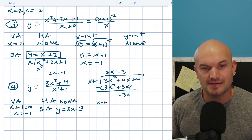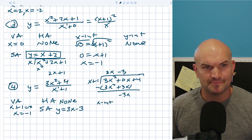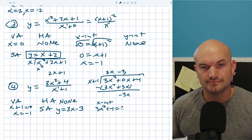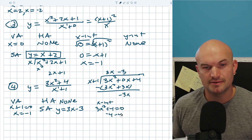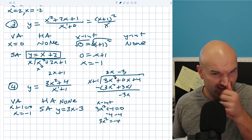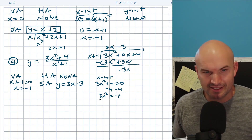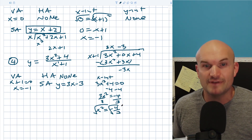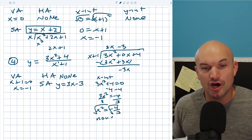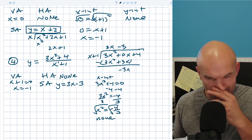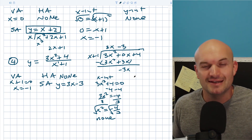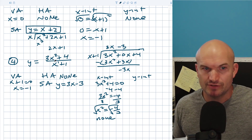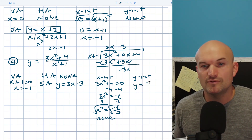For my x-intercept, I set the numerator equal to zero: 3x squared plus four equals zero. Subtracting four from both sides gives 3x squared equals negative four, and x squared equals negative four-thirds. You can't take the square root of a negative number, so there are no real x-intercepts. For my y-intercept, that's just constant over constant — all the x's go to zero — so y equals four over one, which is just four.